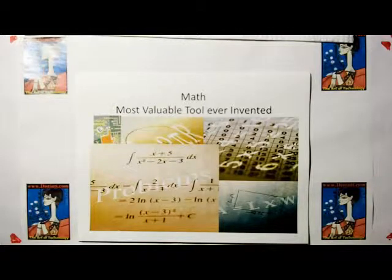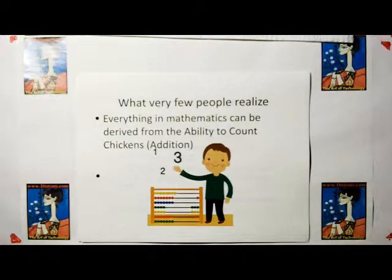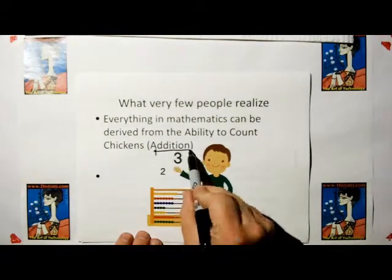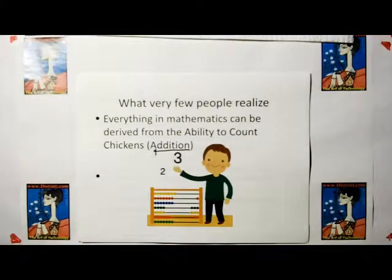Mathematics is the most valuable tool that mankind has ever invented. What few people realize is everything in mathematics can be derived from the ability to count chickens, basically addition. If you can do addition, you can do anything in mathematics. And you say, well, that's kind of naive. How can you say that?